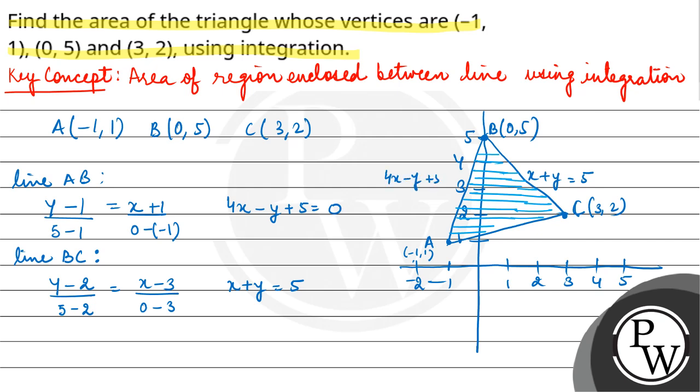AB is 4X minus Y plus 5 equals to 0, and line AC, which is Y minus 1 upon 2 minus 1 equals to X minus (-1) upon 3 minus (-1), so this gives X minus 4Y plus 5 equals to 0.